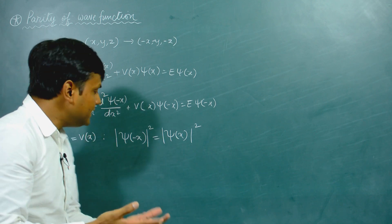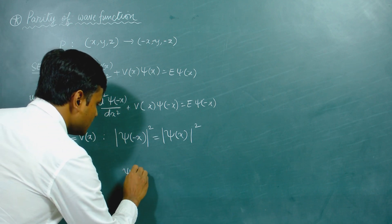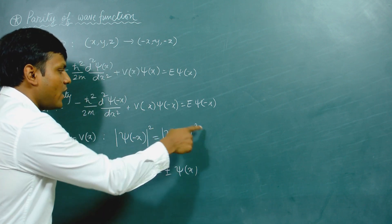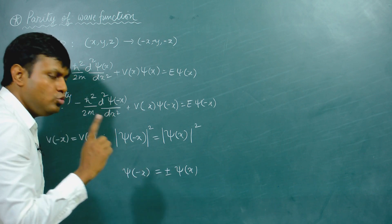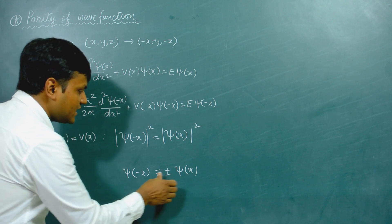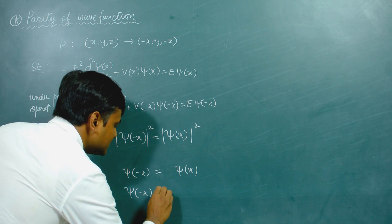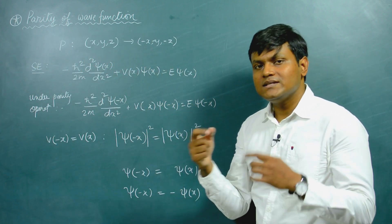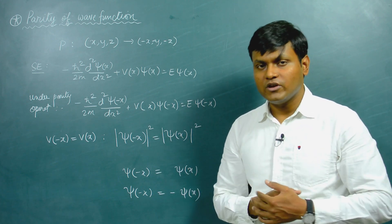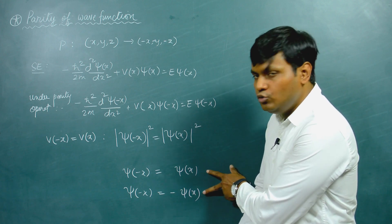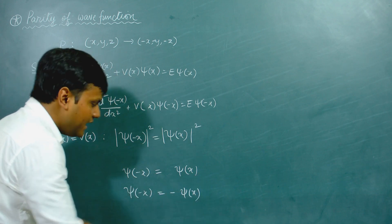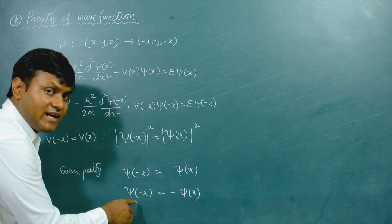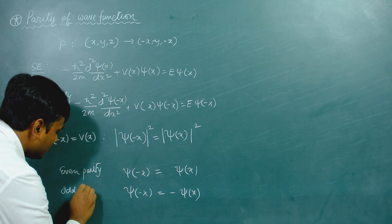This opens up two distinct possibilities: ψ(−x) = ±ψ(x). In one possibility, ψ(−x) = ψ(x) — this is known as an even parity wave function. In the other possibility, ψ(−x) = −ψ(x) — this is known as an odd parity wave function. So whenever you are dealing with potentials that are symmetric with respect to parity operation, you will end up getting wave function solutions which can have either even parity or odd parity.